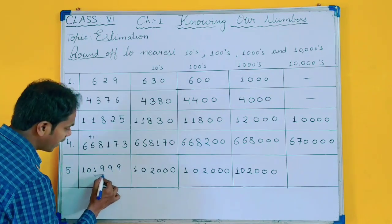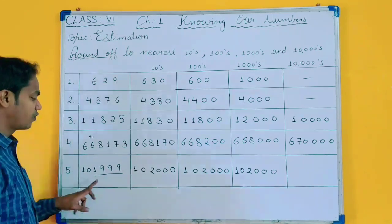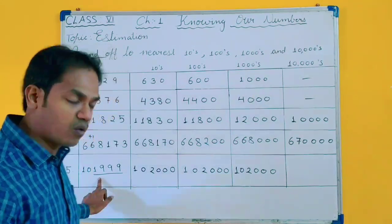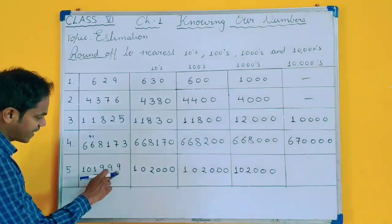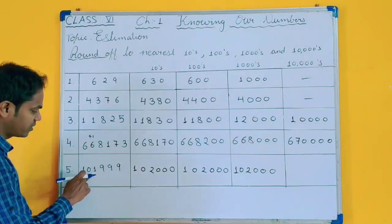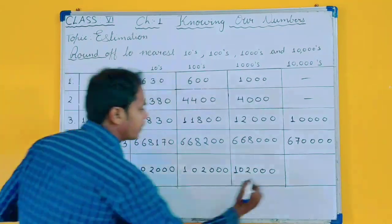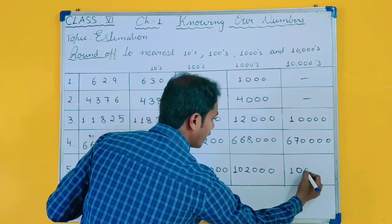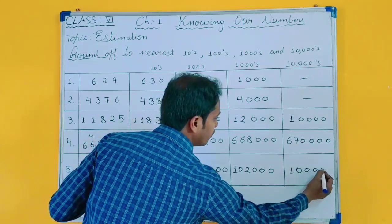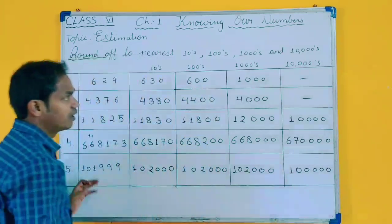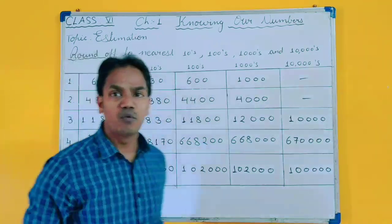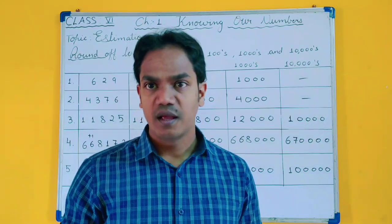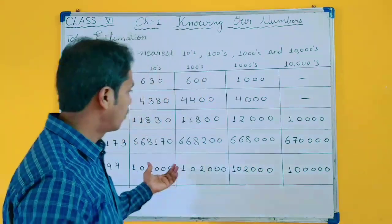For rounding off to 10,000, you will check the last 4 digits; it must be more than 5000. But this is less than 5000, so the result is 10,000. This is your rounding off to tens, hundreds, thousands, and ten thousand.